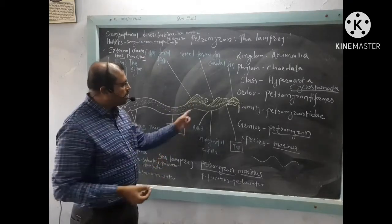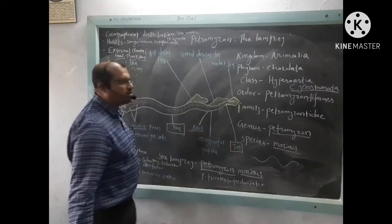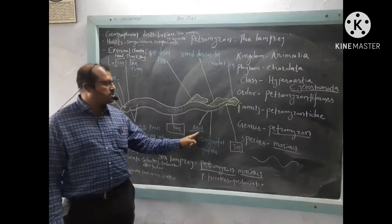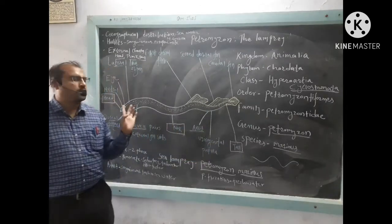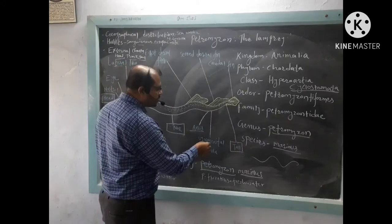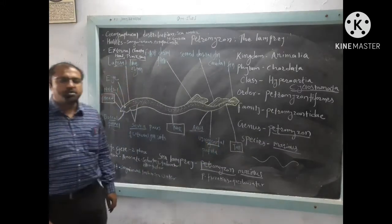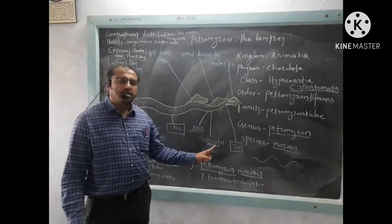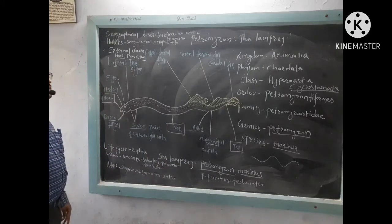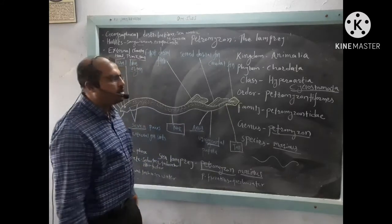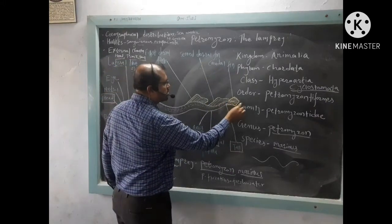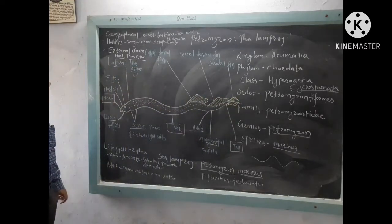On the ventral side of the trunk region there is a cloaca with an anus. Just beside the anus is the urinogenital papilla, which serves both urinary purposes (excreting nitrogenous waste) and genital purposes (releasing gametes). The tail region is tapering and laterally compressed, bearing the caudal fin which extends from the second dorsal fin.